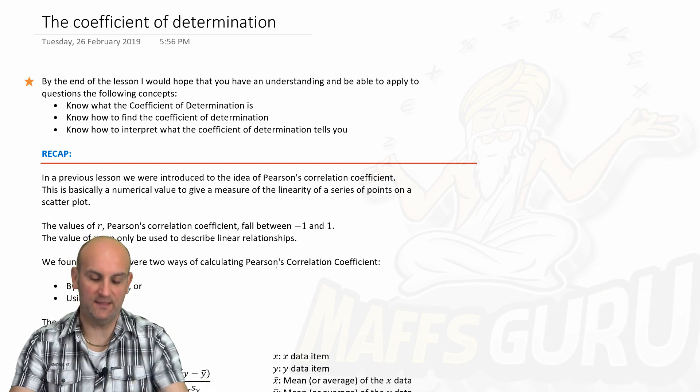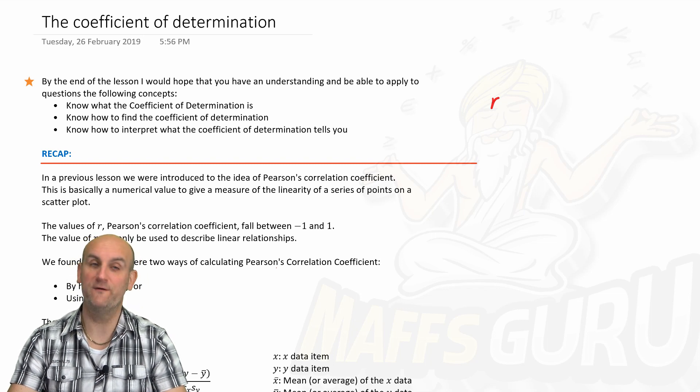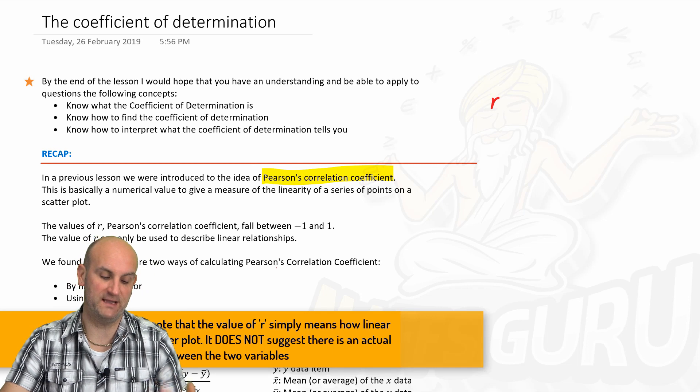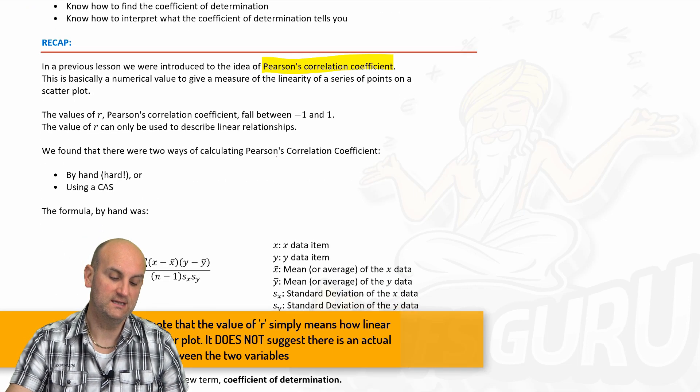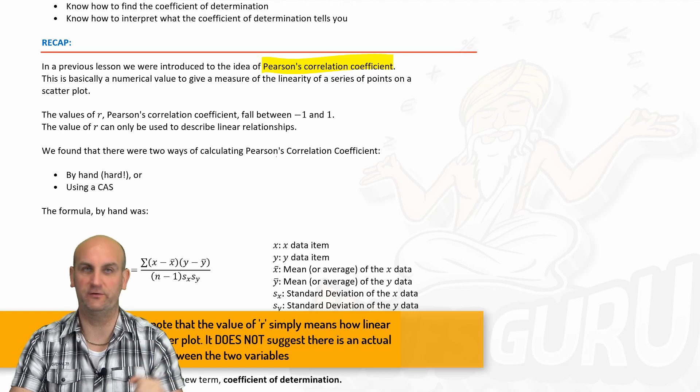Okay, so in a previous video, what did we do? We looked at the value of R, which was Pearson's correlation coefficient. Now Pearson's correlation coefficient is basically a numerical value to give a measure of the linearity of a series of points on a scatter plot.